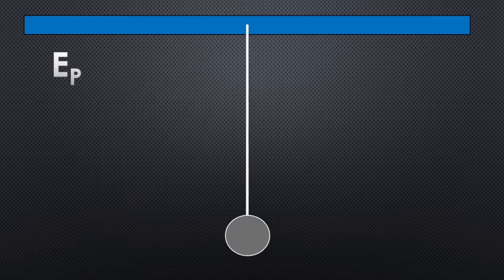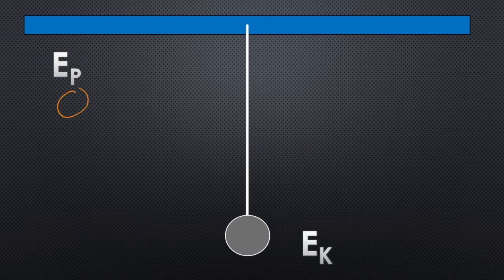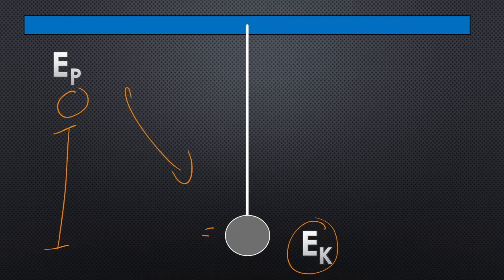What happens with a pendulum is we pull the mass up, and because it's raised off the ground it has Ep — potential gravitational energy. But then as you release it, it starts to fall, swings down to its lowest point, and here it can't really go any lower. It's lost all that potential energy it had from being raised up, and it's all been converted into kinetic energy. So up here it was at a high height, and at the bottom it's moving quite quickly — Ep gravitational getting turned into Ek.